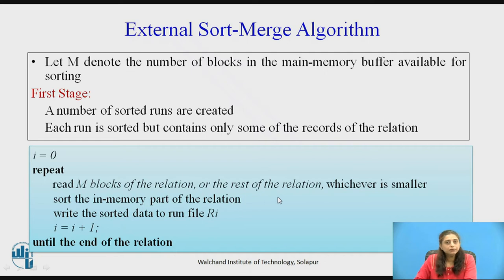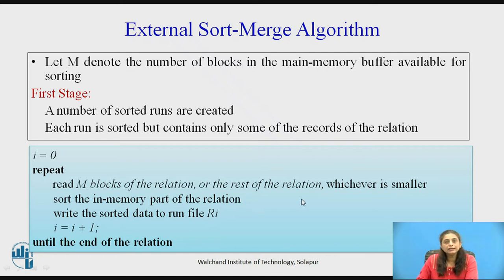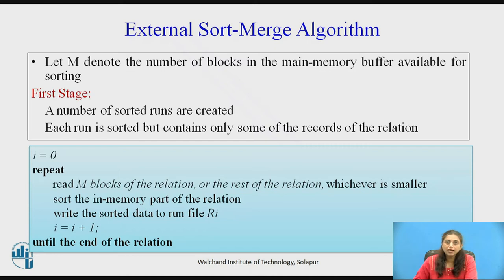Here, M denotes the number of blocks that we can fit into main memory. In stage one, read M blocks of the relation, sort them individually, and write the result back to disk. This generates the first run. Then read the next M blocks and repeat until the entire relation R is processed. This generates a number of sorted runs.